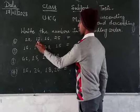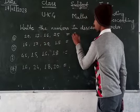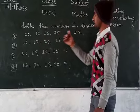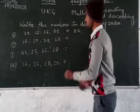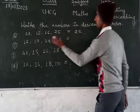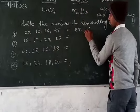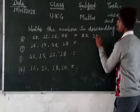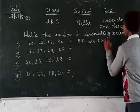The numbers are 20, 12, 16, 9, and 25. The smallest number is 9. The biggest number is 25. In ascending order: 9, 12, 16, 20, 25.